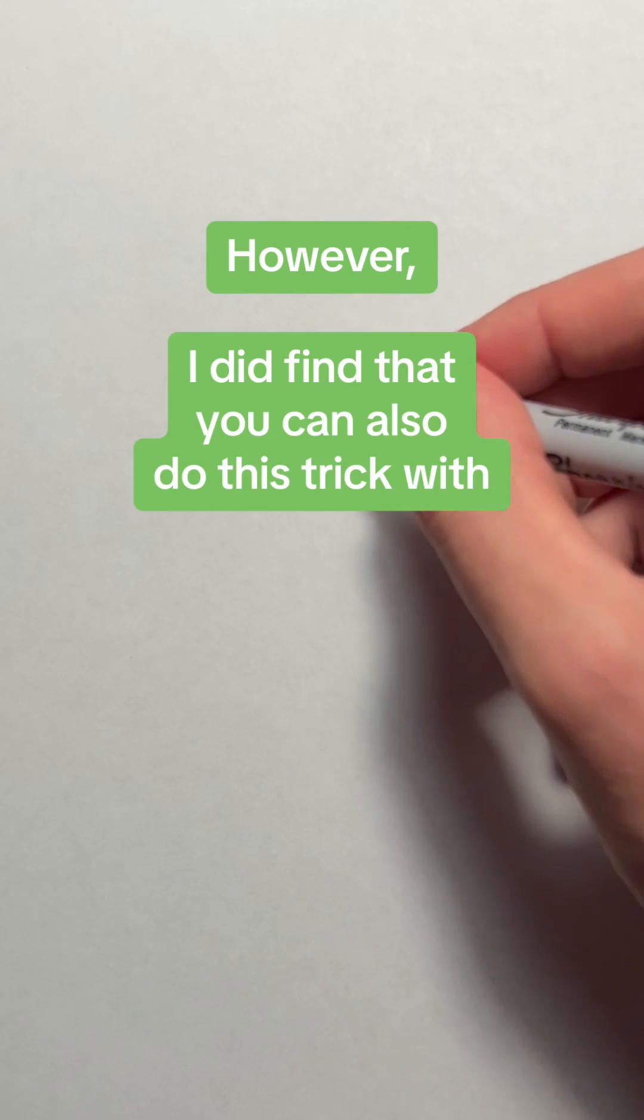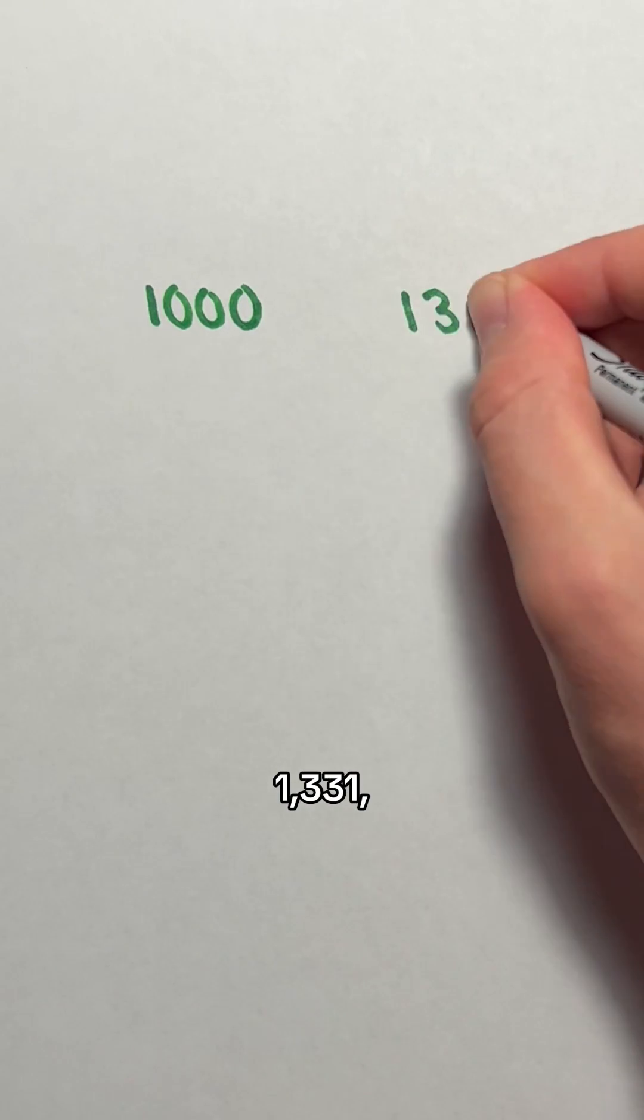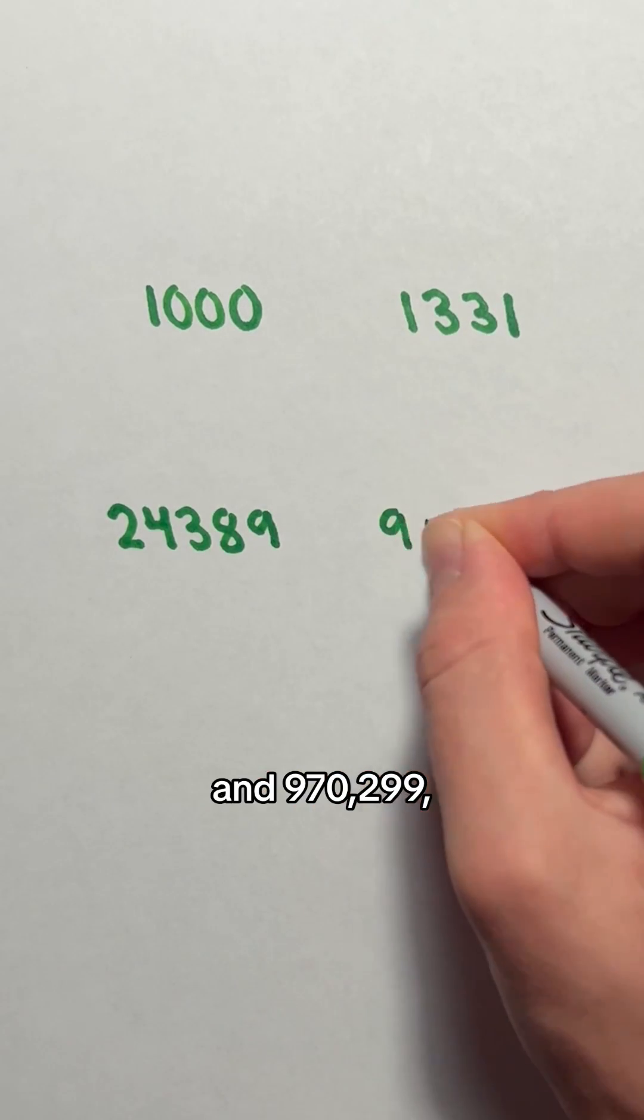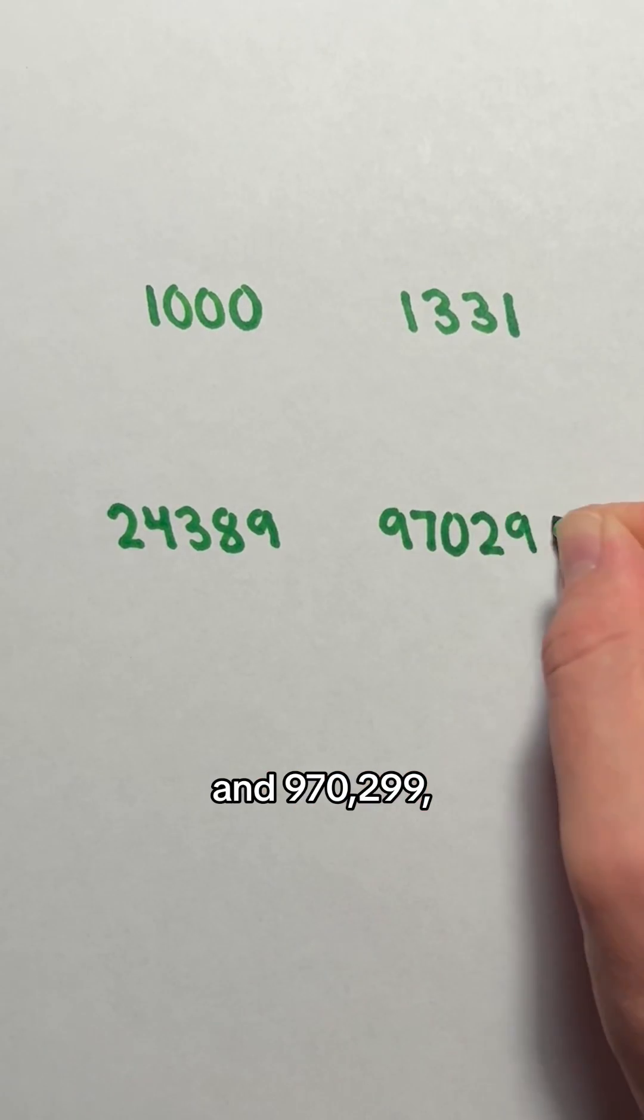However, I did find that you can also do this trick with 1000, 1331, 24,389, and 970,299.